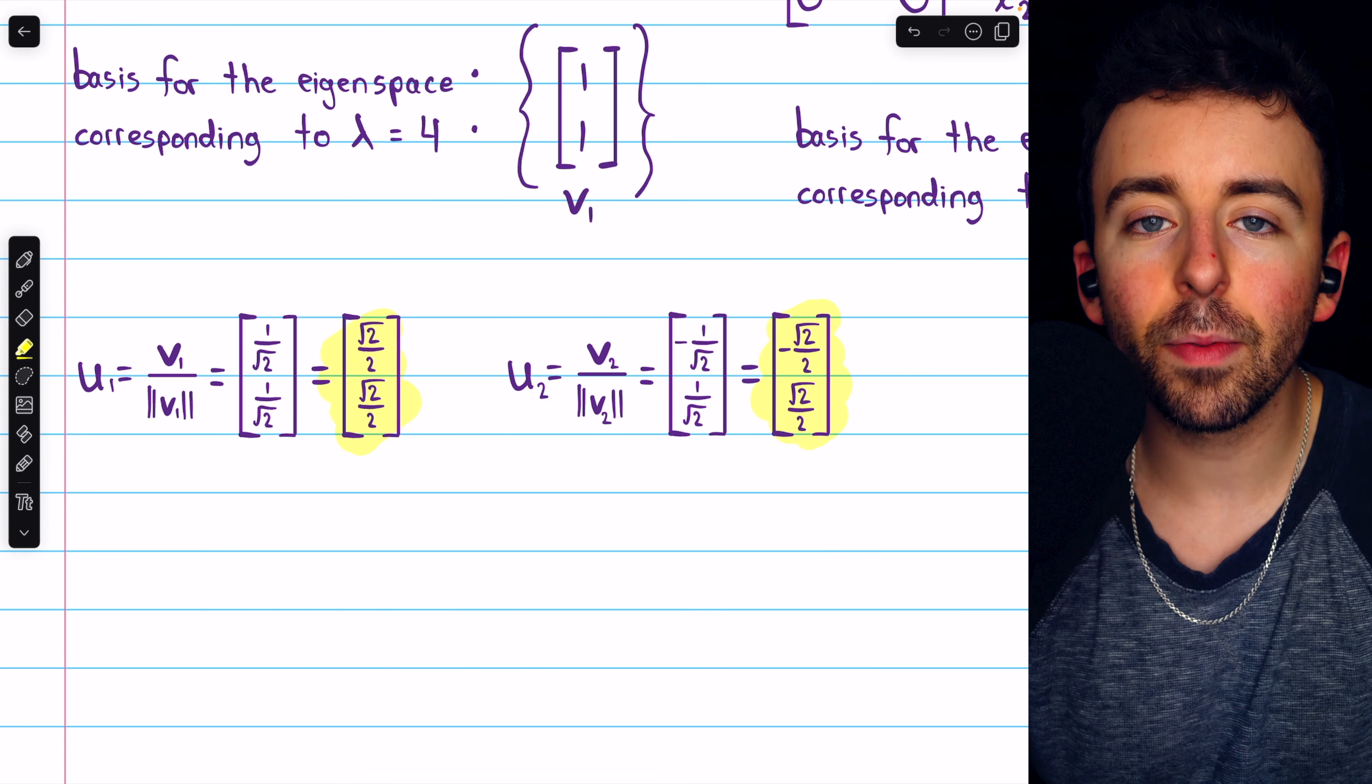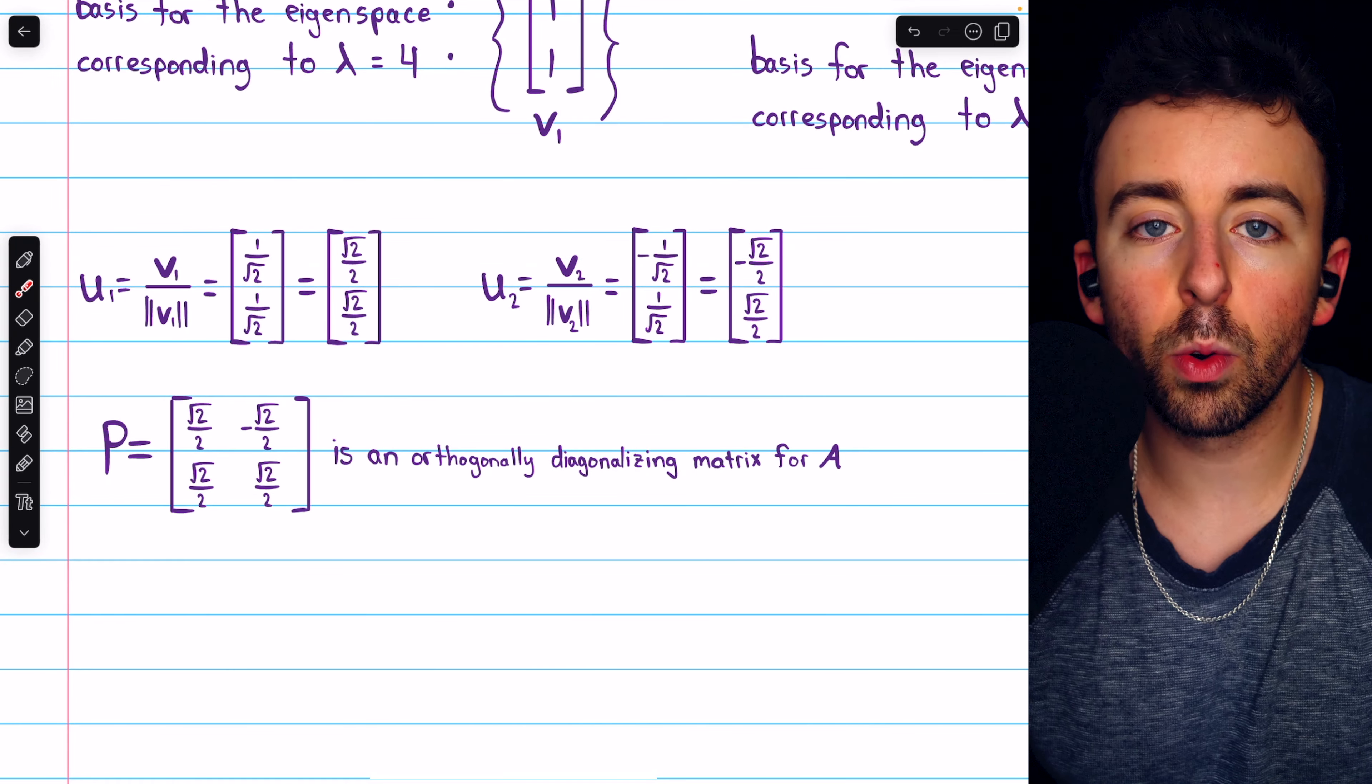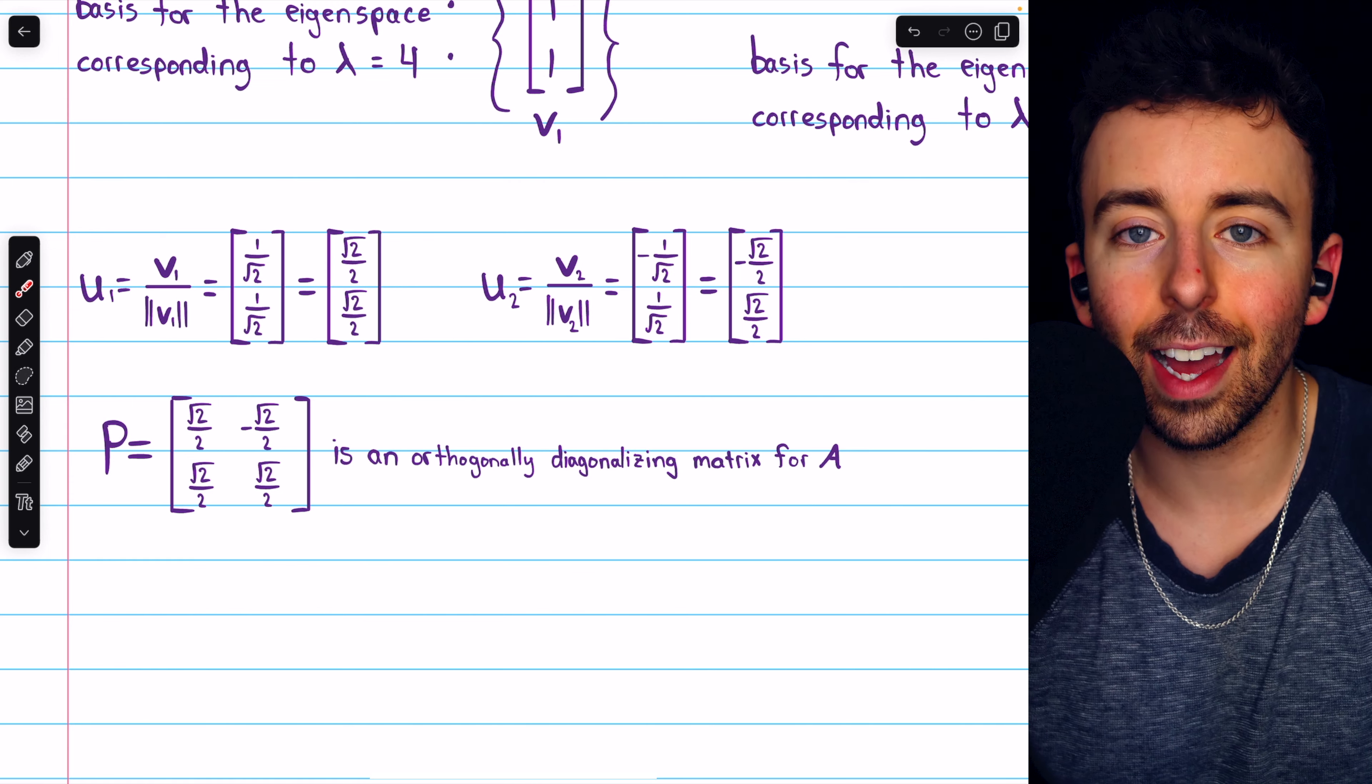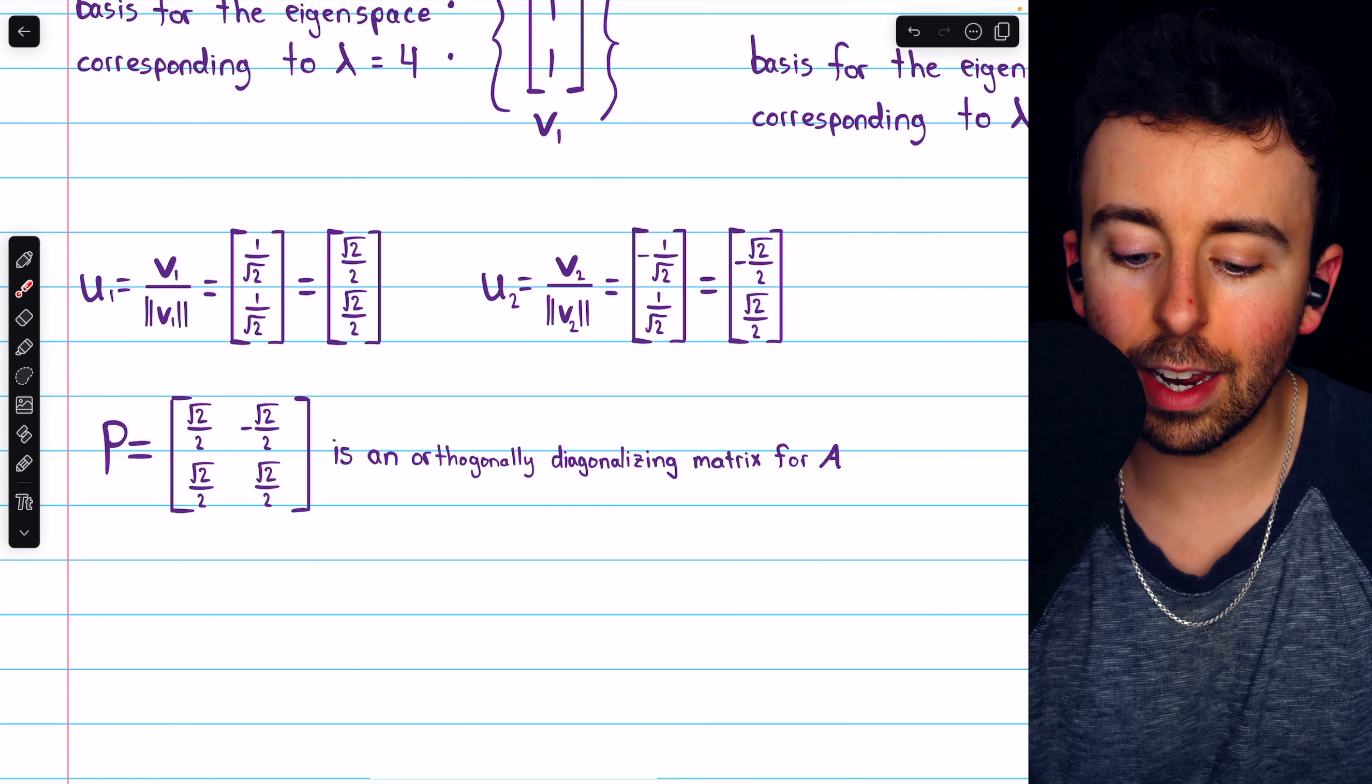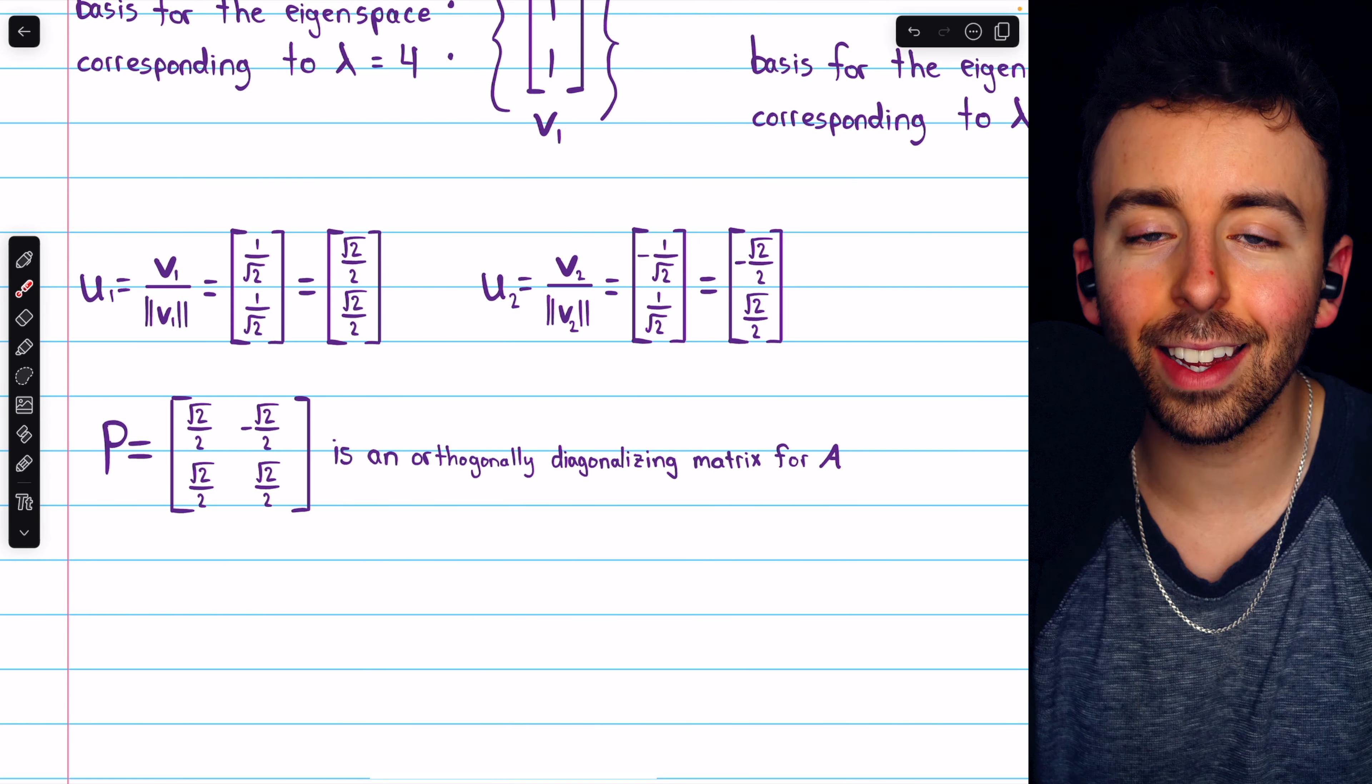We can use these then as the columns for P, our orthogonally diagonalizing matrix. So once you get an orthonormal set of all of your basis eigenvectors, those are the columns of your orthogonally diagonalizing matrix. In our case, it looks like this. You can see u1 as column 1, and u2 is column 2. This matrix P is an orthogonal matrix, and it's going to diagonalize A.